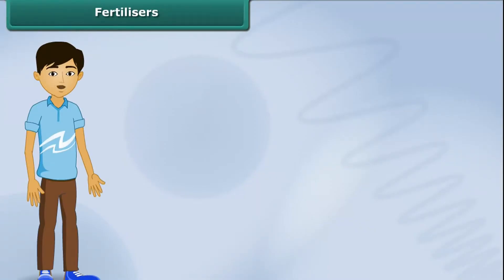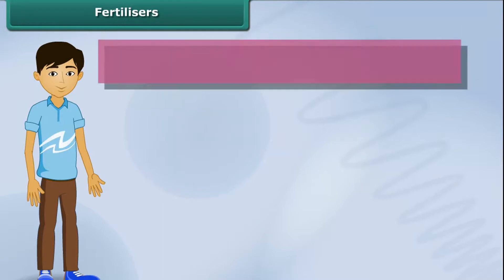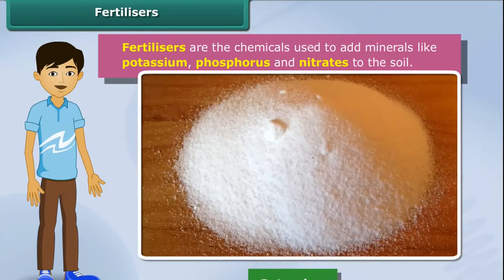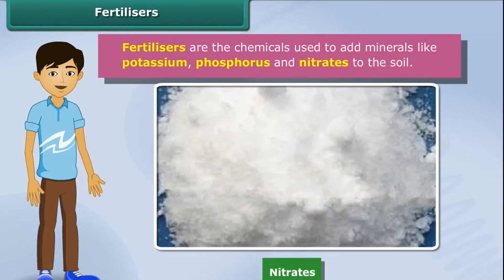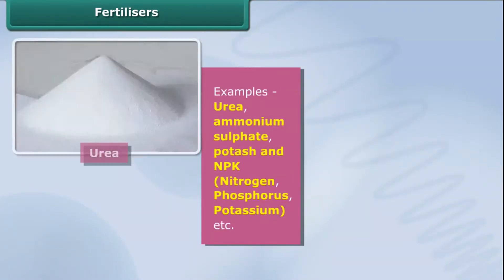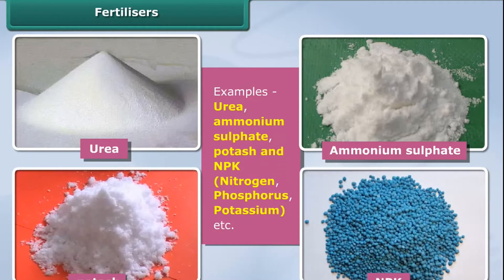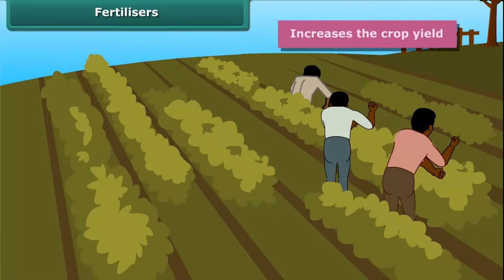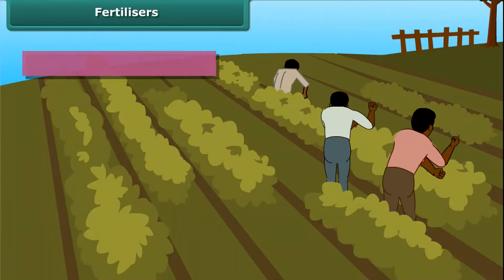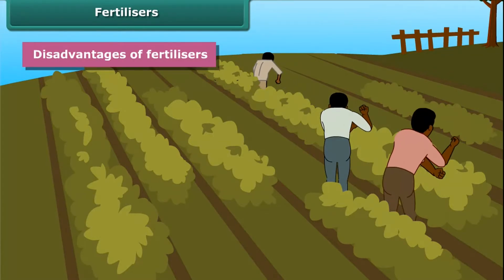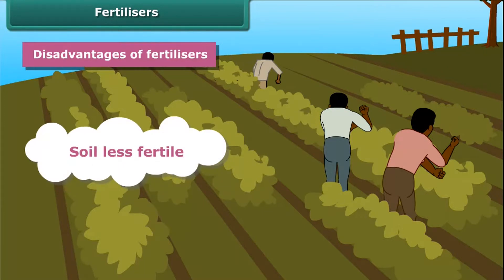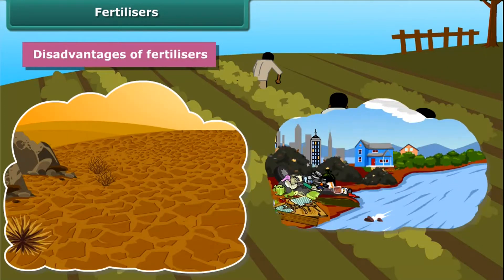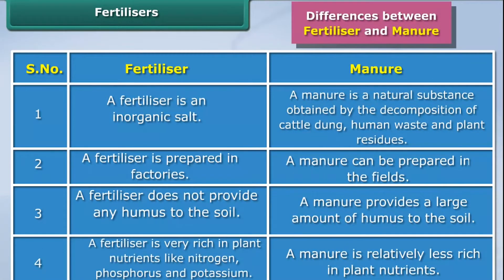Like manure, fertilizers are also used in replenishing the lost nutrients and minerals in the soil. Fertilizers are chemicals used to add minerals like potassium, phosphorus, and nitrates to the soil. Fertilizers are produced in factories. Some examples of fertilizers are urea, ammonium sulfate, potash, and NPK — nitrogen, phosphorus, and potassium. The use of fertilizers increases the crop yield. However, excessive use of fertilizers makes the soil less fertile and they have also become a source of water pollution.